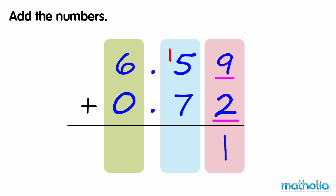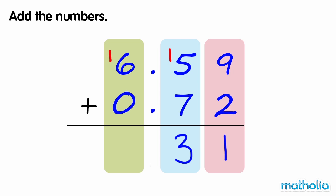Now we add the tenths. 1 tenth plus 5 tenths plus 7 tenths equals 13 tenths. We can regroup 13 tenths into 3 tenths and 1 one. Remember to write the decimal point.